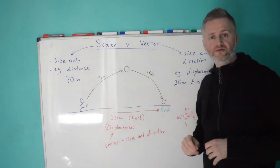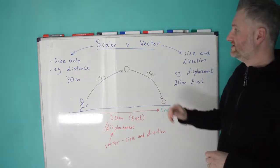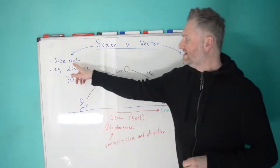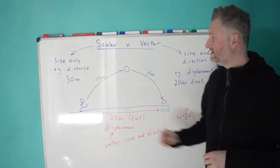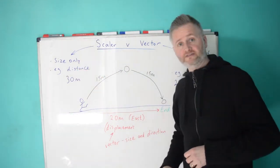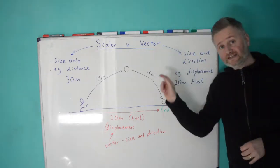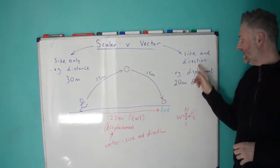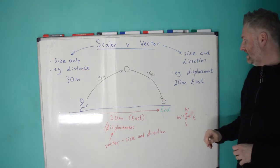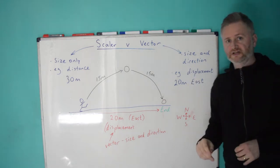Right, I want to tell you about scalar and vector. So, a scalar has size only. An example of that could be distance. And a vector has size and direction. An example of that is displacement.